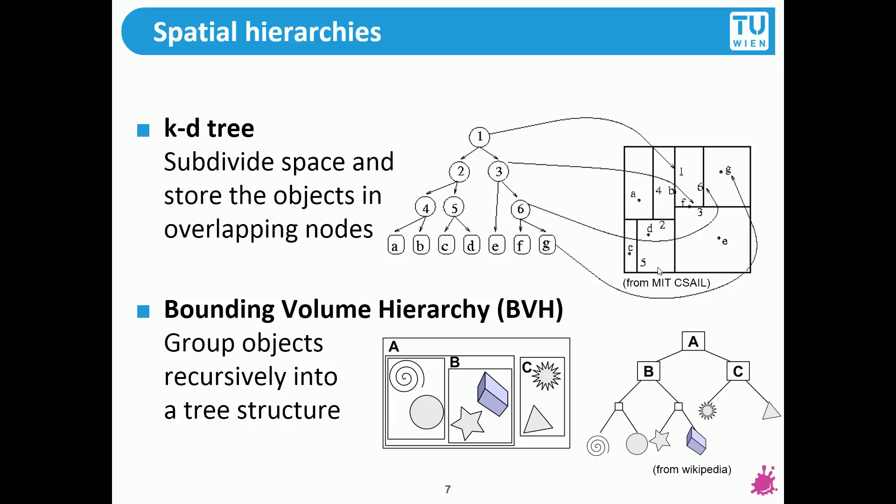Half of the objects are left of the cut, half of the objects are right of the cut. In 3D this would be a cut plane through the volume but it's the same procedure. Then you recursively subdivide the parts, the two sub volumes that you generated with the first cut, and also try again to have half of the objects there, half of the objects there. You continue with this procedure until you have one object per volume.